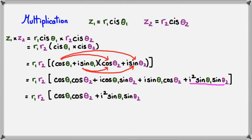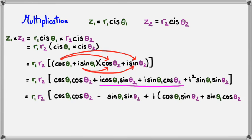And I've got plus this lot here. As you can see, i is a common factor in both of the terms. So I'm going to take i out, and it will be written as i times cos theta 1 sine theta 2 plus sine theta 1 cos theta 2.